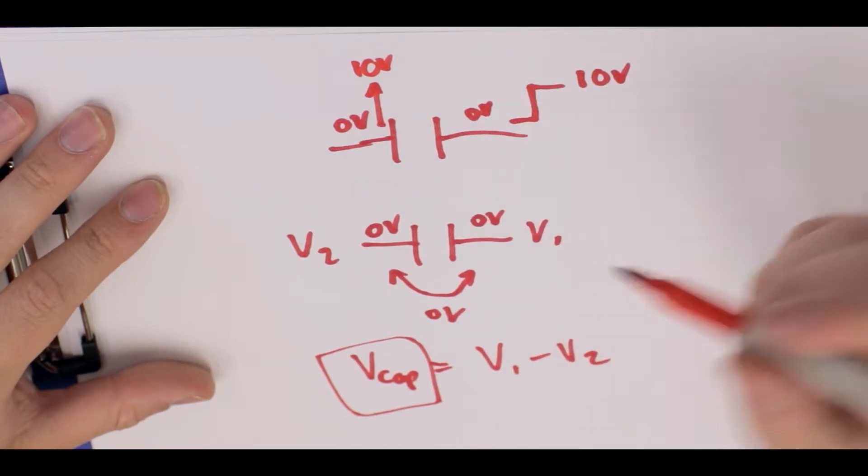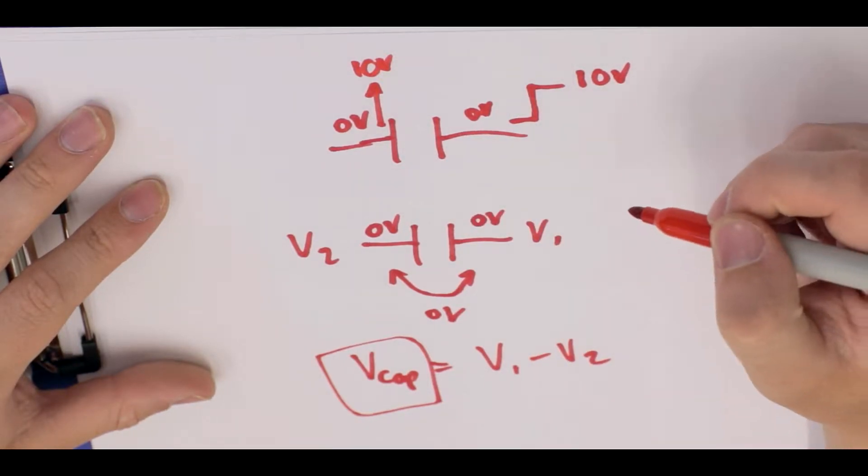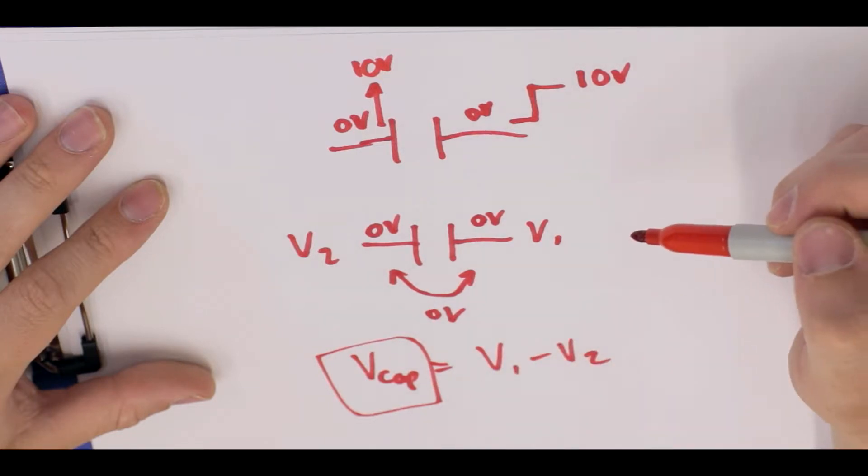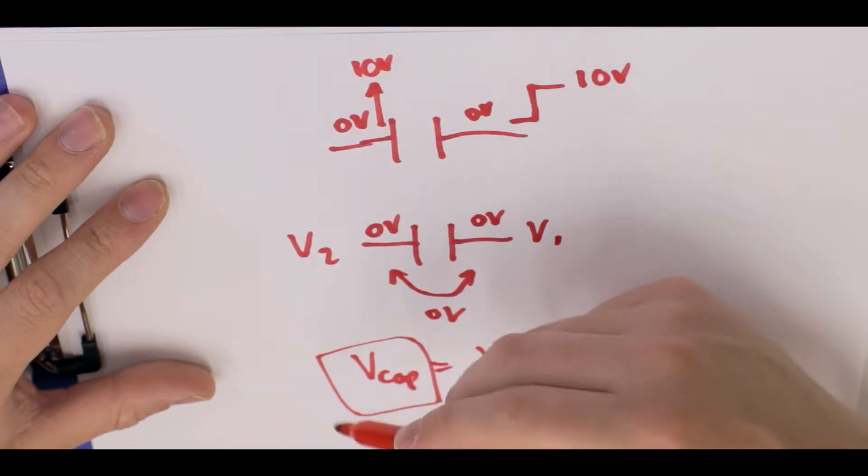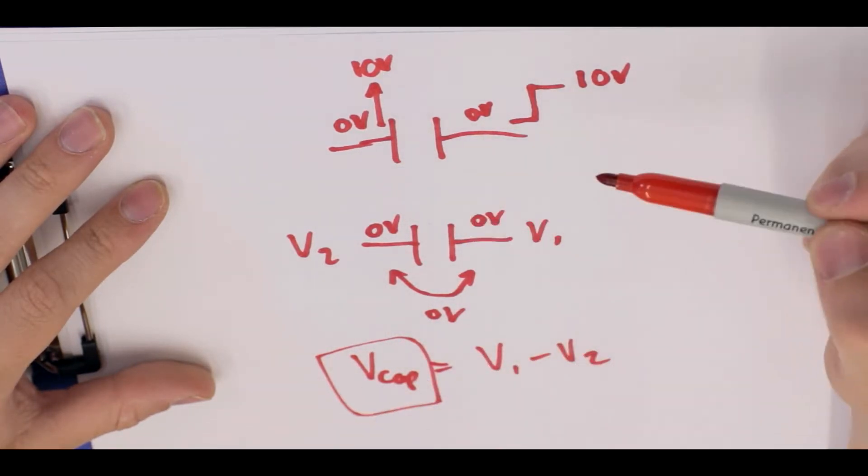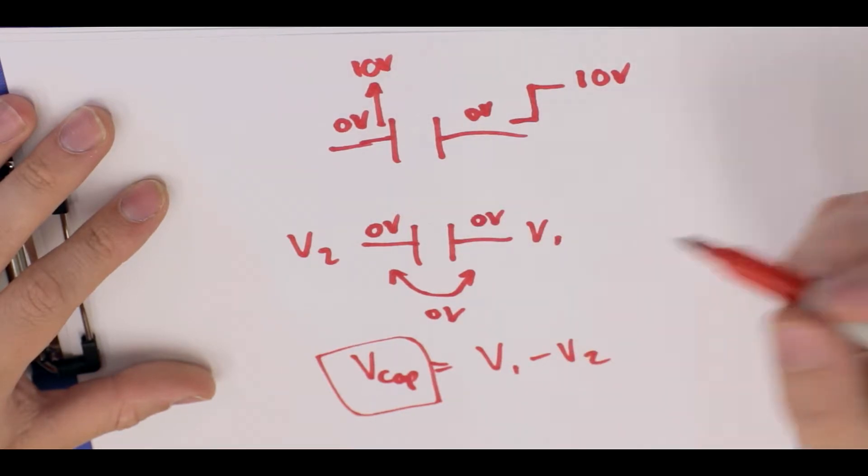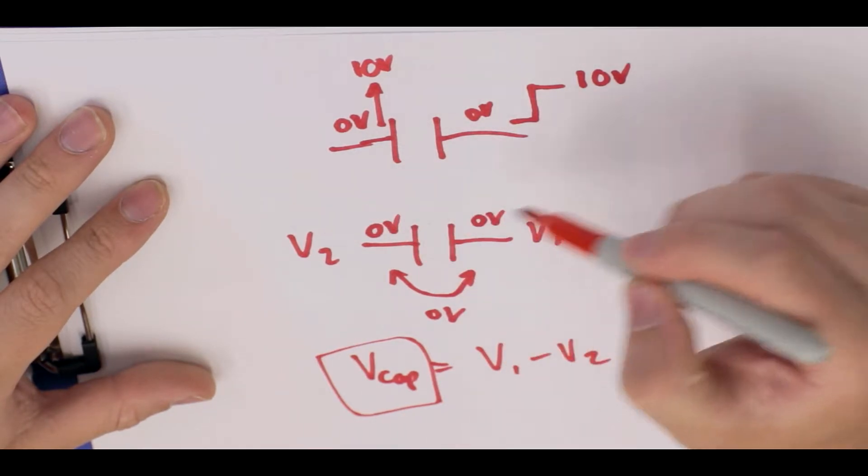So normally it'd be zero minus zero, so it'd be zero. Then this goes up to 10. So V_cap is now 10 and it goes, well that wasn't what it was before. It wants to try and maintain V_cap at zero. So this side jumps up as well to 10 volts. So therefore the difference becomes 10 minus 10 becomes zero.